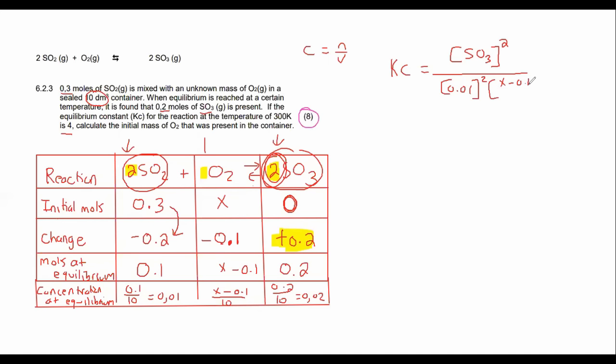And then for this one I can say 0.2 / 10 which is 0.02. Okay, makes sense. So now they have given us the KC value, they've told us that the KC value is 4.